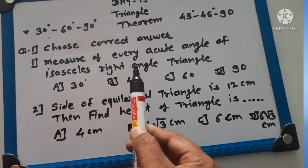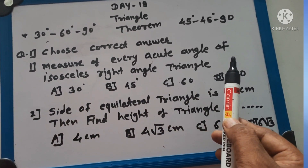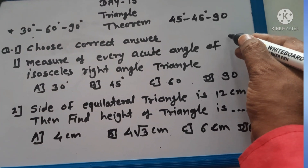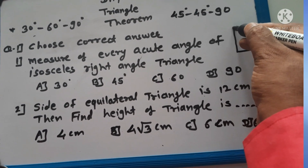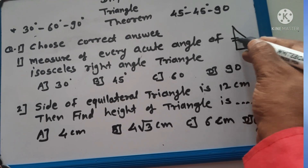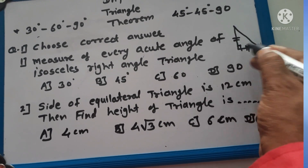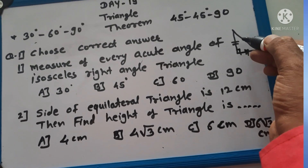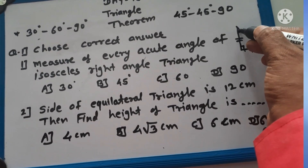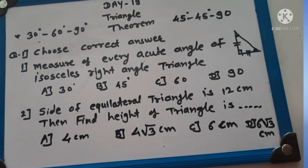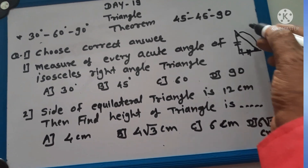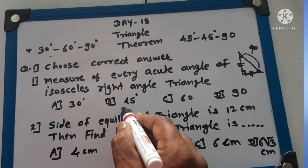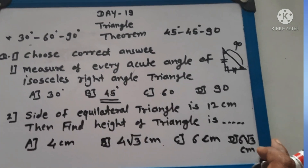Choose the correct answer. The measure of every acute angle of an isosceles right angle triangle — isosceles means two sides are equal, and the right angle is 90 degrees. The opposite angles of equal sides are equal, and together those two angles total 90 degrees. So each acute angle is 45 degrees. The right answer is 45 degrees.